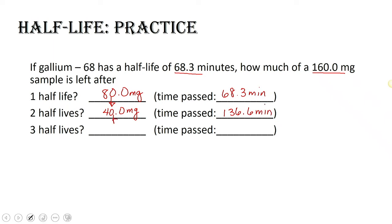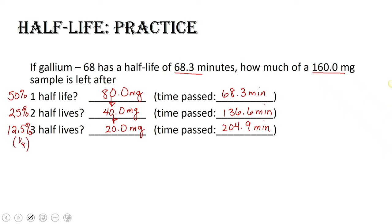If we have three half-lives, that 40 milligrams is going to be reduced by half, and we have 20 milligrams remaining after three half-lives, which is 204.9 minutes. So what percent remains? After one half-life we have 50%; after two half-lives we have 25%; and after three half-lives we have 12.5% — which is one-eighth, one-fourth, and one-half respectively.